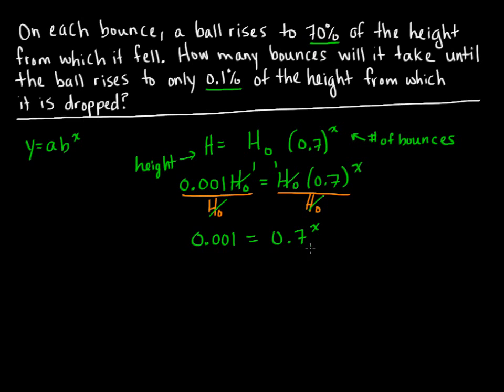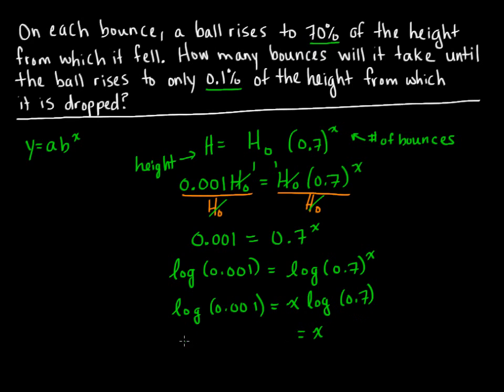In order to solve this exponential equation, we can either try and make the bases the same, or we can apply logarithms. Here, let's take the common logarithm of the left side and the common logarithm of the right side. We know by logarithm laws that we can take this exponent here and put it in front. Now we can divide both sides by the log of 0.7, so we get x equals the logarithm of 0.001 over the logarithm of 0.7.